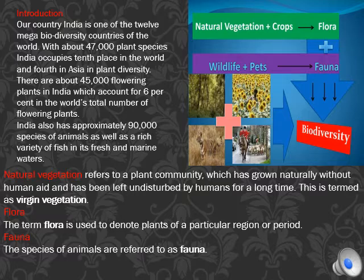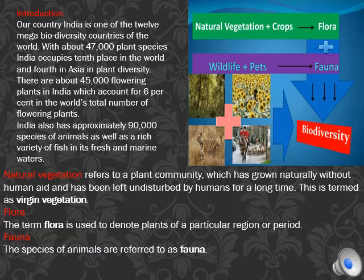Flora is used to denote flowering plants of a particular region, and fauna is used to denote animals of a particular region. Flora equals all flowering plants plus crops, and fauna equals wildlife plus pets. So all these belong to biodiversity.